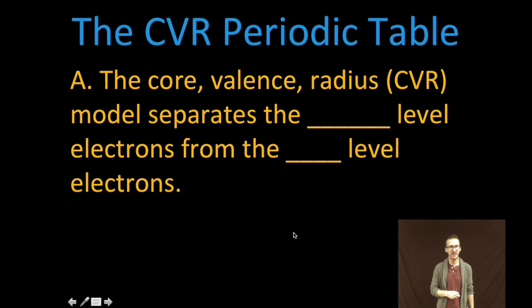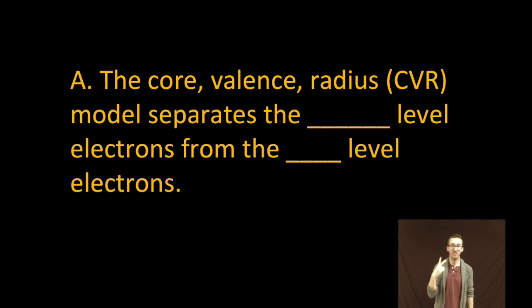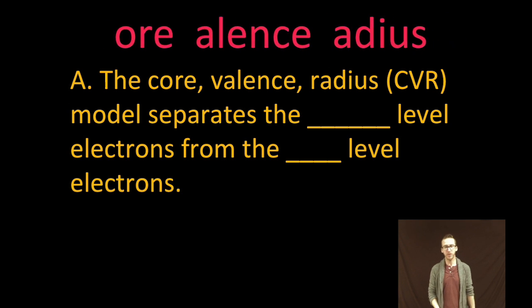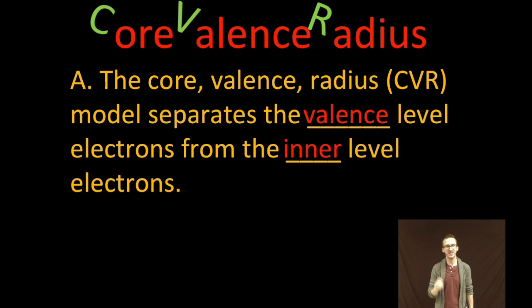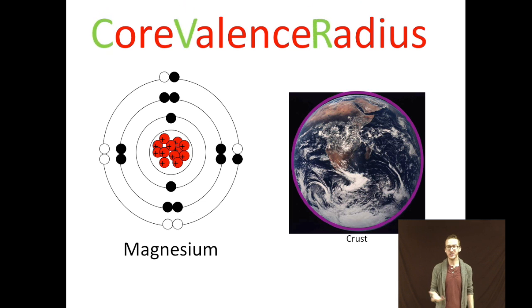Okay, so the core valence radius, or CVR model, separates the valence level electrons from the inner level electrons. Now why do we even want to do that? Our focus is going to be on the valence level and the valence electrons, because it's those electrons that determine the chemistry for the atom of the element we're dealing with.